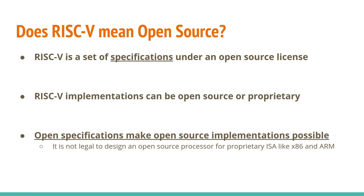Sometimes people ask if RISC-V is an open source processor or an open source CPU — but that's not quite right. RISC-V is just a set of specifications under an open license, so RISC-V implementations can be either open source or proprietary. But open specifications make open source implementations possible. We can't have an open source processor for a proprietary ISA like x86 or ARM, so RISC-V being open makes it possible for us to have open source processors.